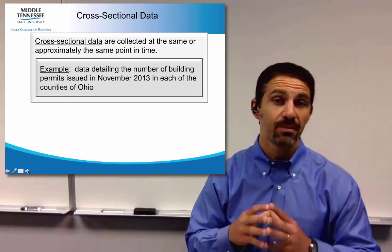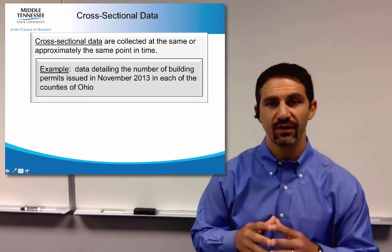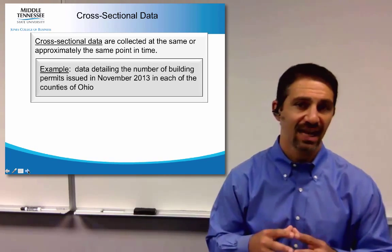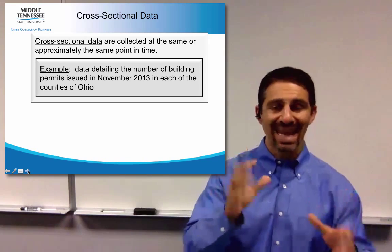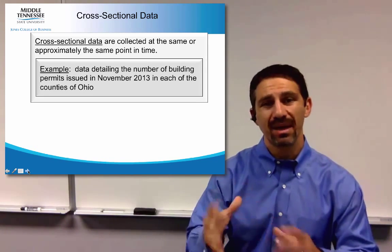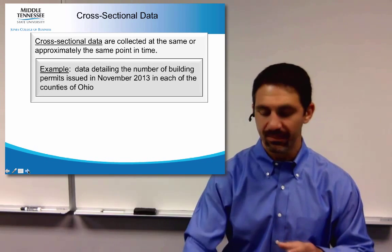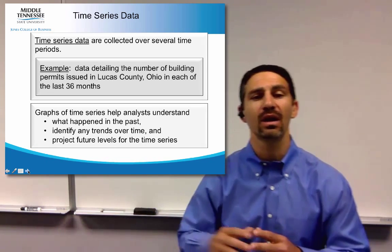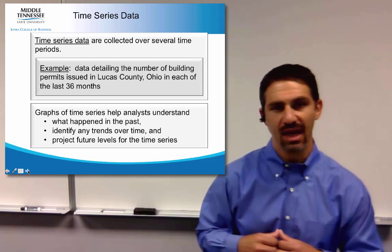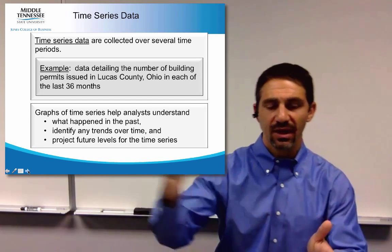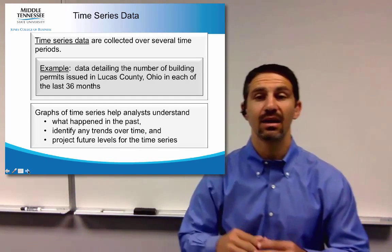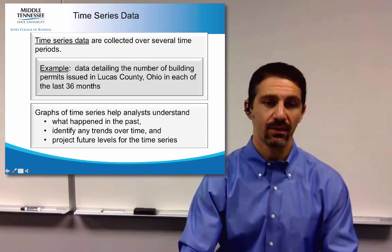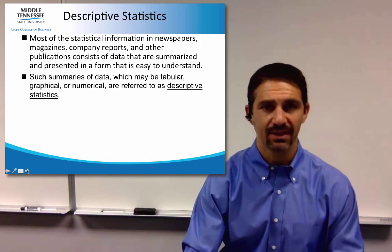Let's look at a couple more options. First, you have cross-sectional data, which looks at data in different components but at the same point in time. Time series data, on the other hand, looks at something over an extended period of time — for example, what is it in March, then September, then December, and so on.